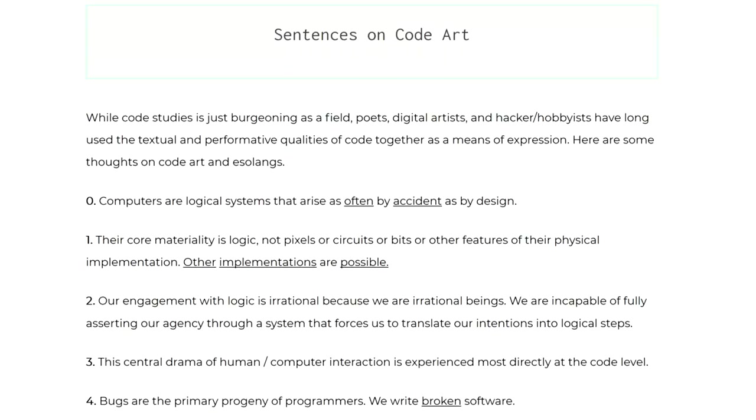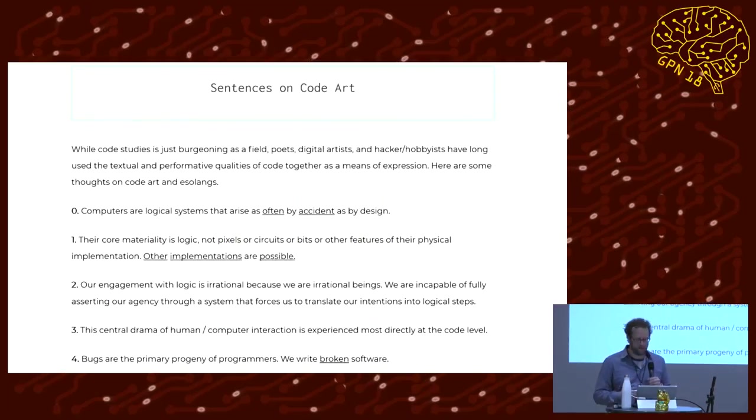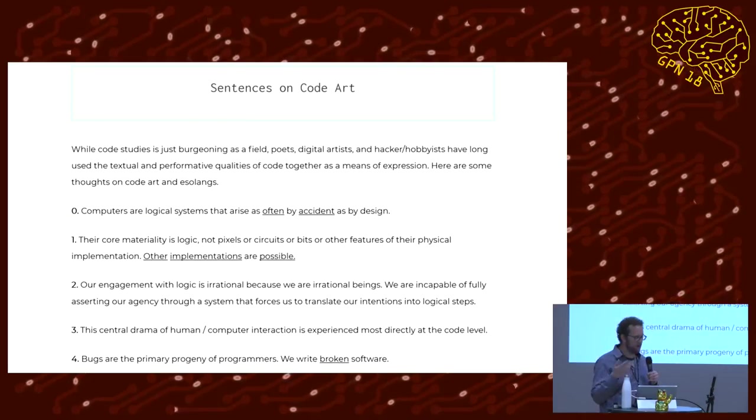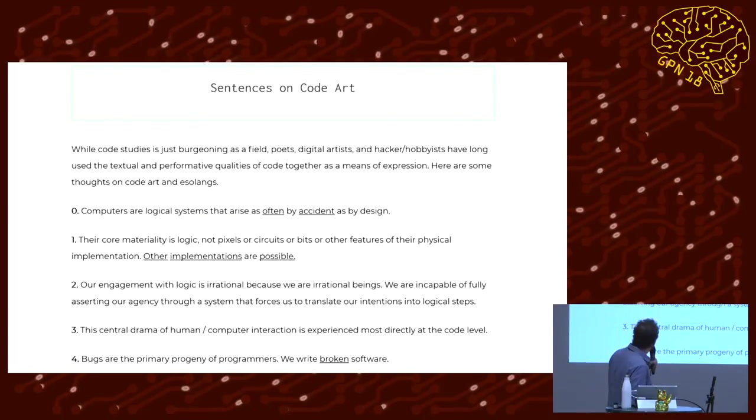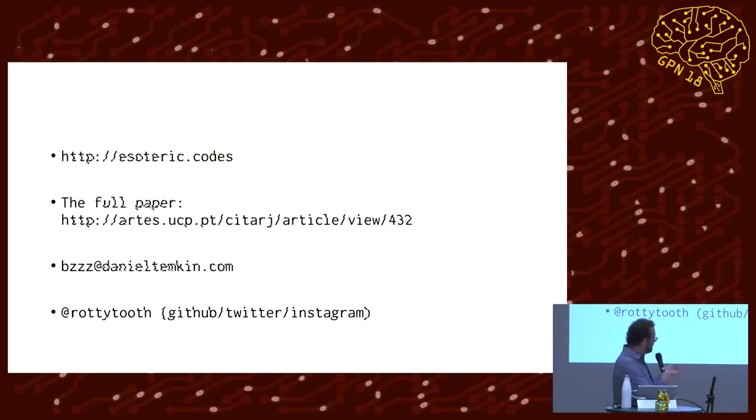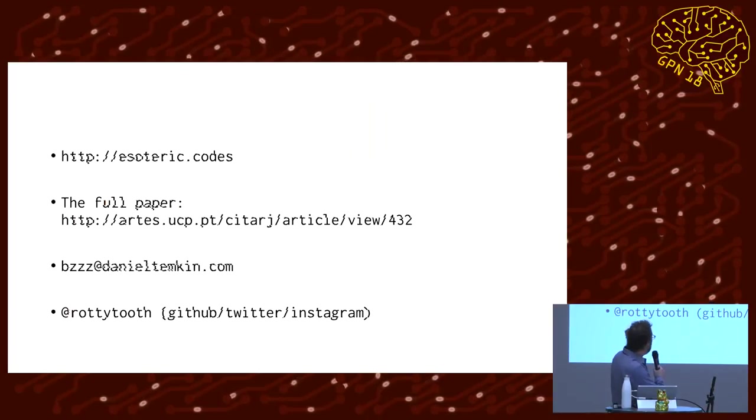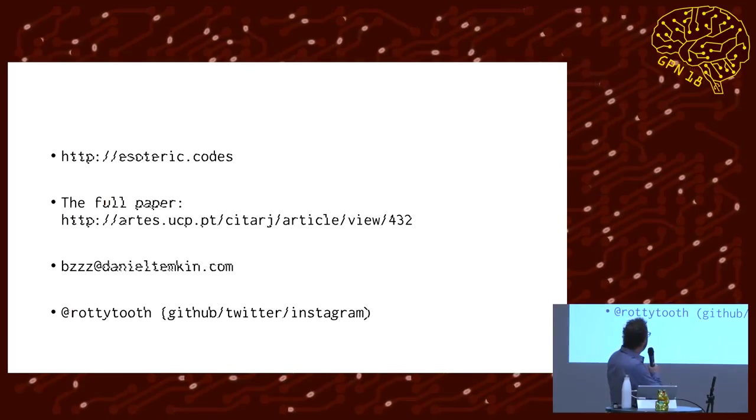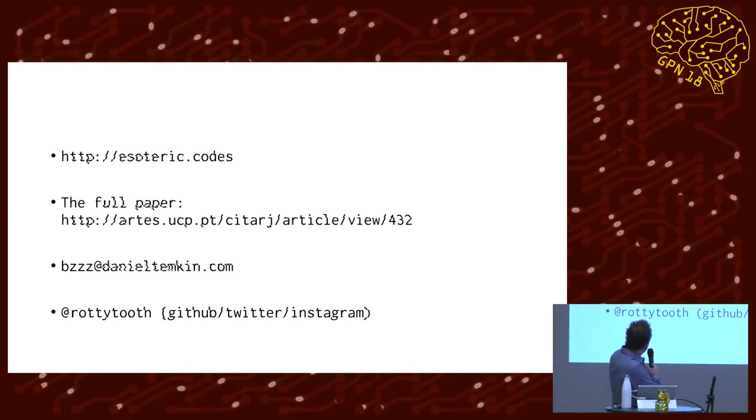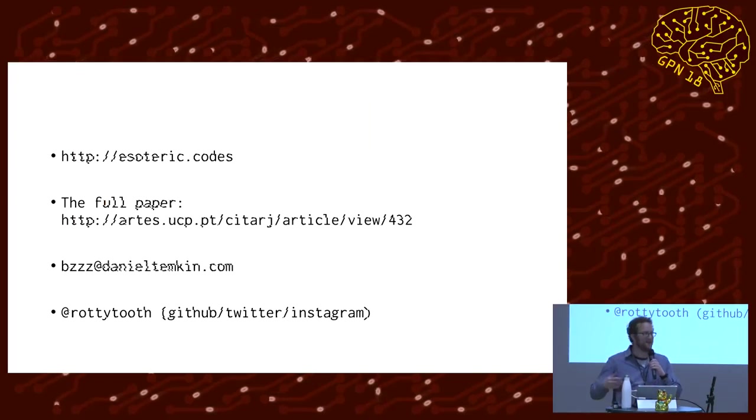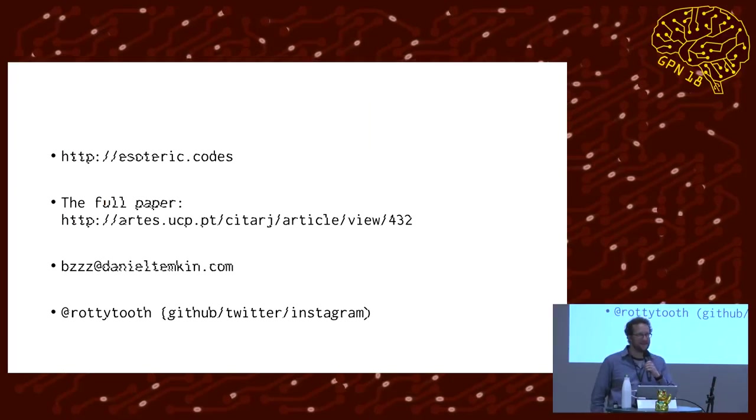I started to put together the sentences on code art, which is essentially looking at how we can think about these systems. And the first two points I make here are 0 and 1, which are really showing the results of what I've been talking about in this session. So, esoteric.codes is the blog. This is where I interview Esolang creators. I have a paper that gets into a little bit more detail about what I was just talking about. In the full paper you can find up on my site, and here's contact information for me. So that's it for me. I do have more Eslangs I can talk about, or I'm happy to take questions. Thank you.